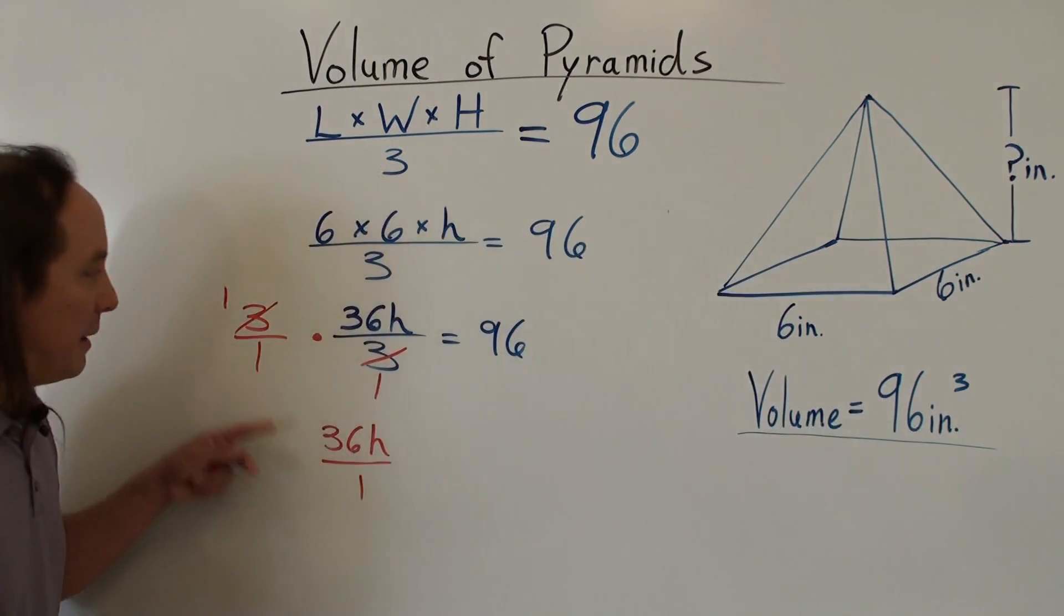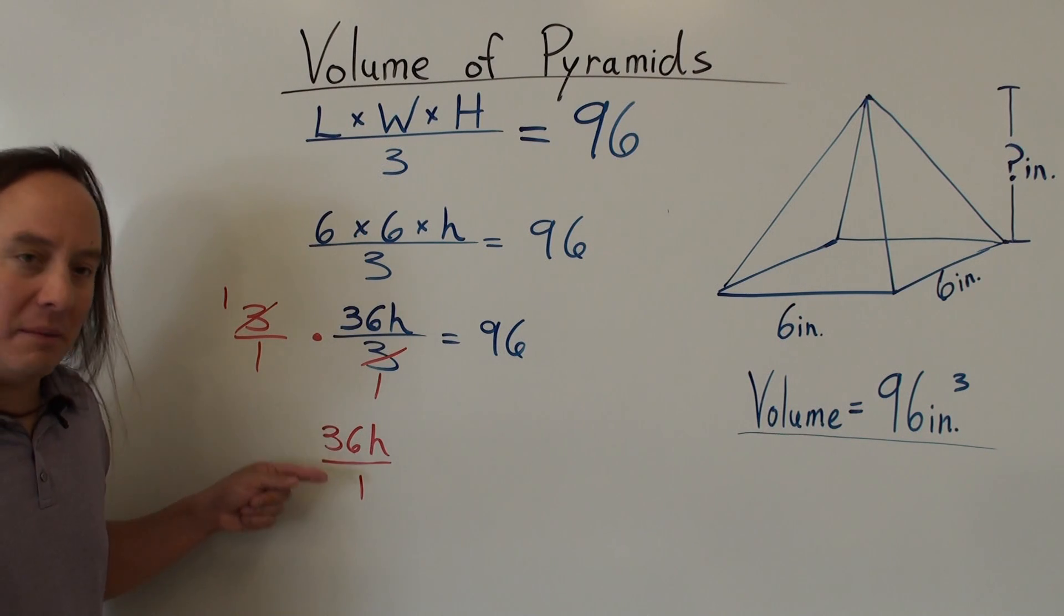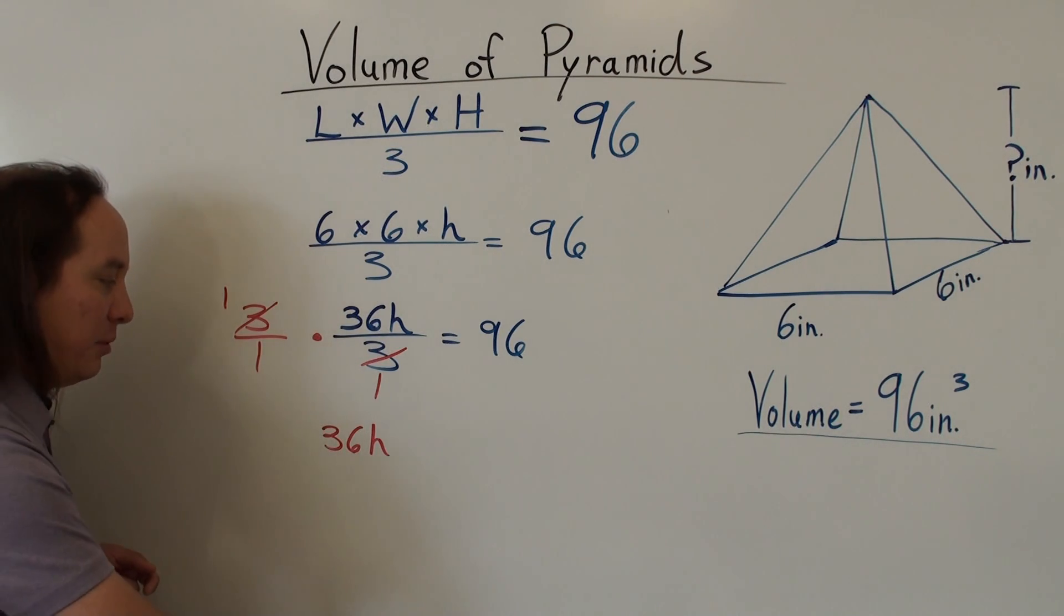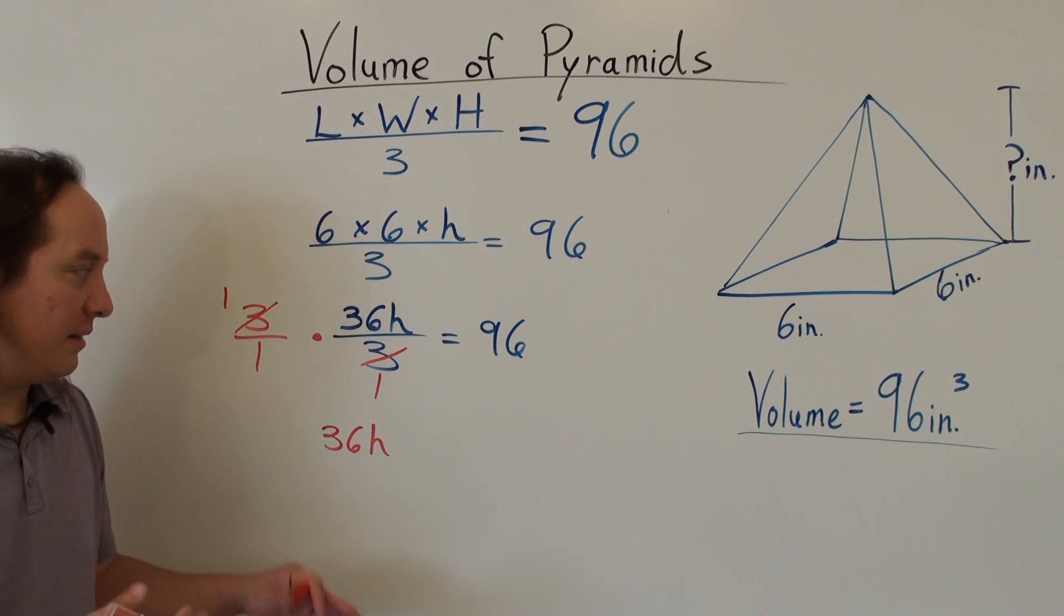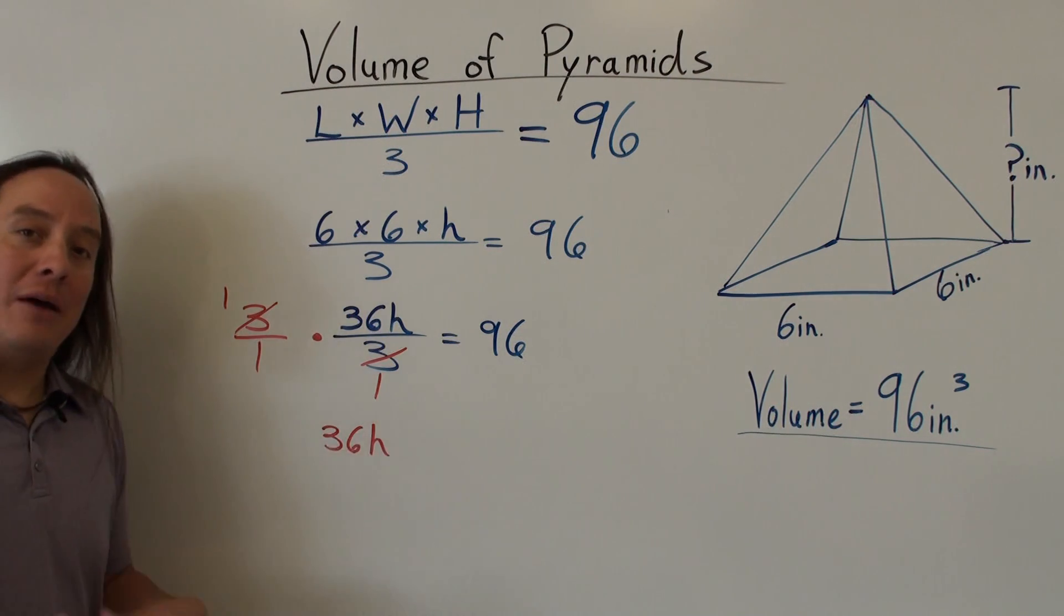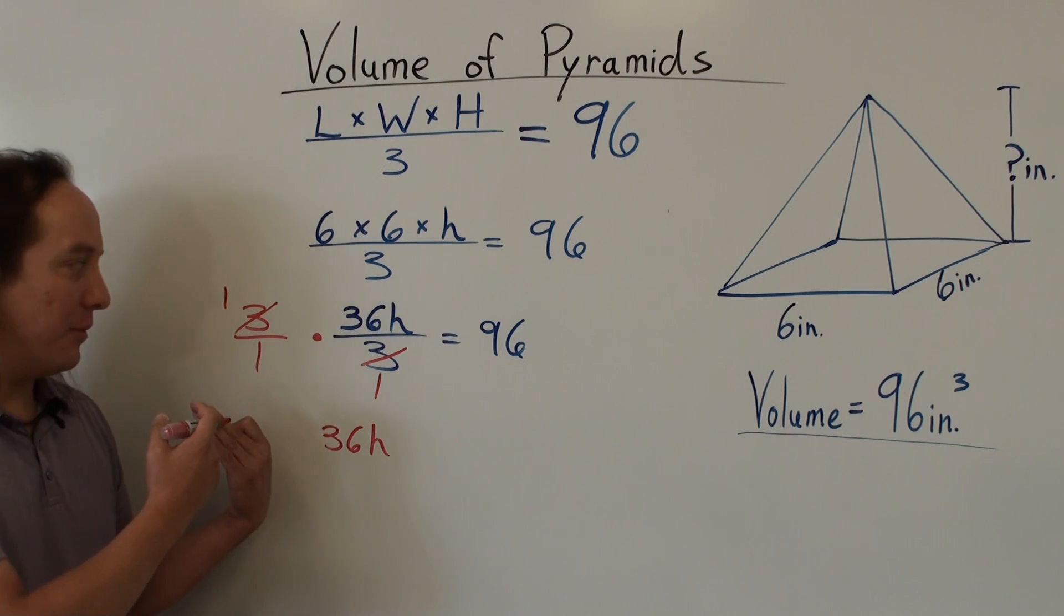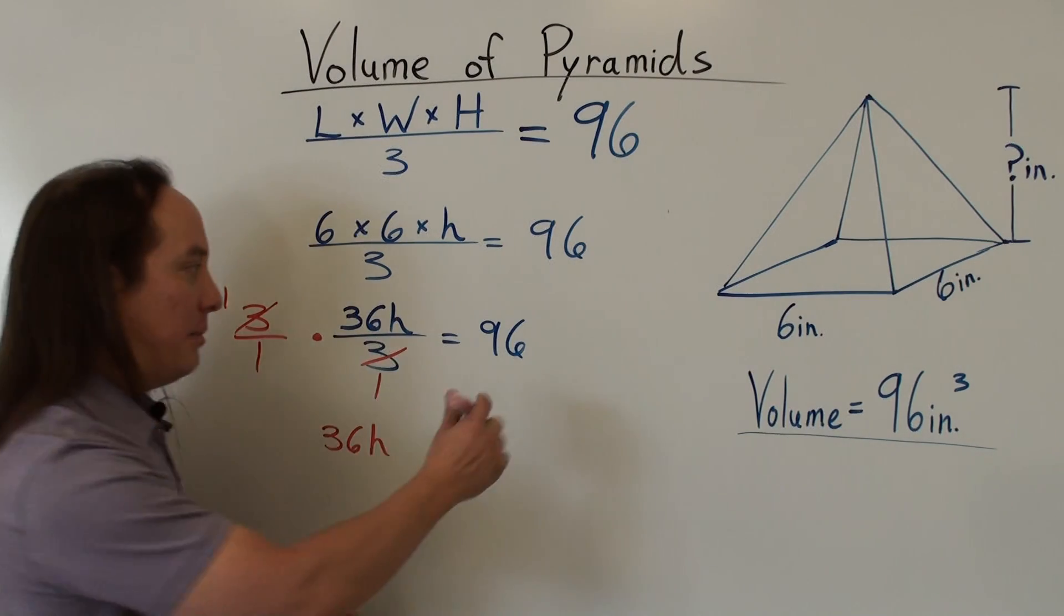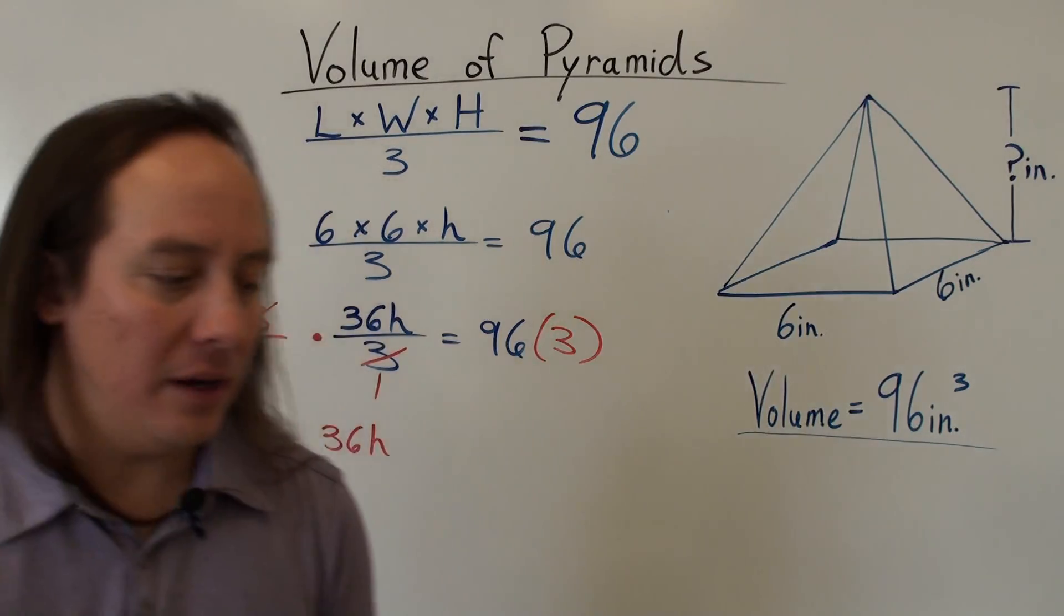But again, the same way that 3 divided by 1 is still 3, 36h divided by 1 is still just 36h. So we really don't need to put that 1 underneath. It doesn't make sense. So now I have 36h all by itself. How did I do that? I multiplied this left side by 3. Multiplied by 3, yes. What I did over here, I have to do over there. So I have to multiply that side by 3.